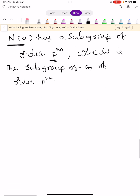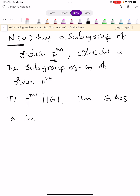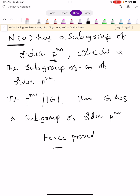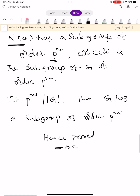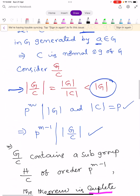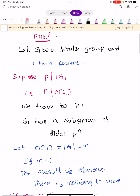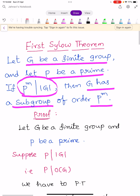Hence we conclude that if p^m divides |G| and G is a finite group, then G has a subgroup of order p^m. This completes the proof. Hence proved. This is an important theorem to learn for examinations. Keep learning — wish you all the best.